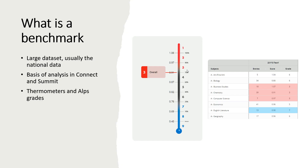Basically, a benchmark is our terminology for the analysis sitting in our platforms Connect and Summit. We take usually the national data set, crunch it down, and then use it to make those thermometers and all the indicators inside your platforms. All of the Alps grading and indicators are the benchmarks. When you submit data to us, we crunch your data and plot it against that national data set.